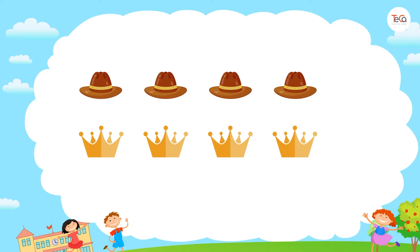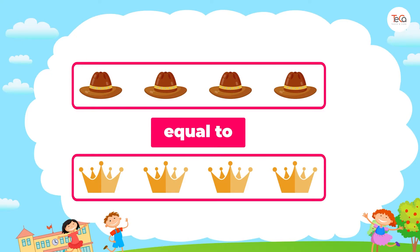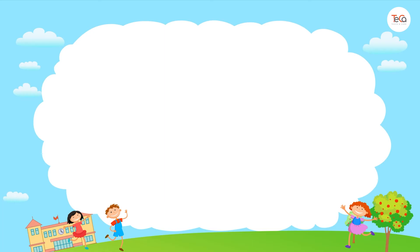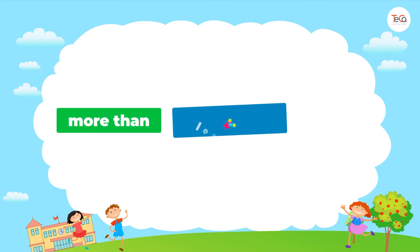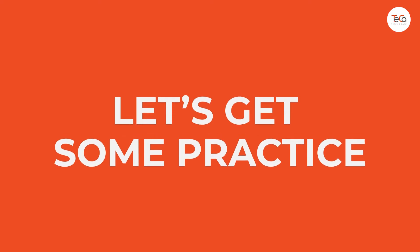So we say the number of hats is equal to the number of crowns, or the number of crowns is equal to the number of hats. I hope you understand more than, less than, and equal to. Now let's get some practice!